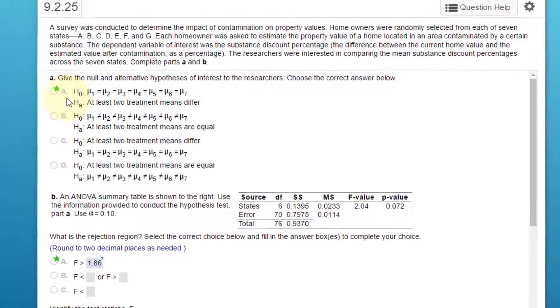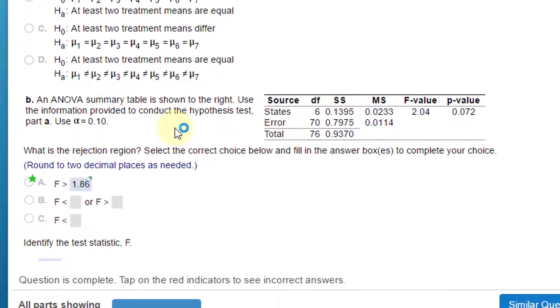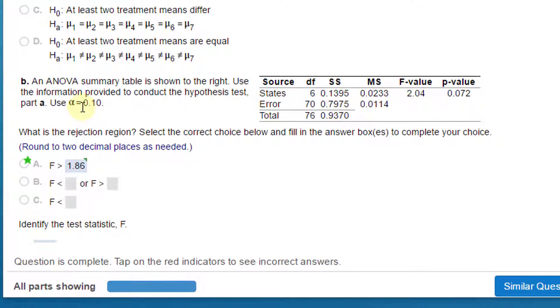The first thing is to give the null and alternative hypotheses. For one-way ANOVA, the alternative is always that at least two of the means differ. The null is that there is no difference in any of the means. They give us the ANOVA table and say to use alpha of 0.1.